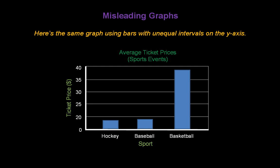Here's that same graph using bars but with unequal intervals on the y-axis. The axis starts at 0, but the first interval is a group of 20, going from 0 to 20, while all the other intervals are intervals of 5. This is misleading — because we didn't use equal intervals, it looks like tickets to basketball games are four times as much as to get into a hockey or baseball event.